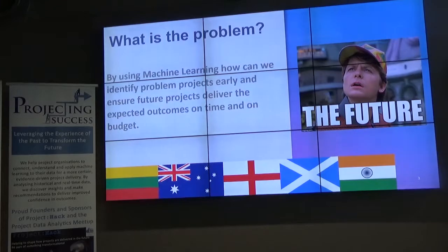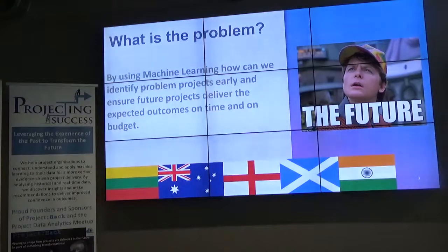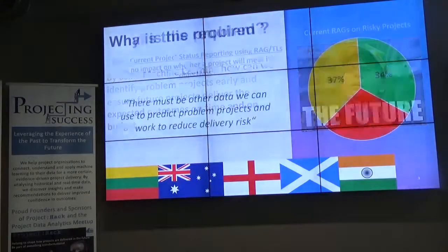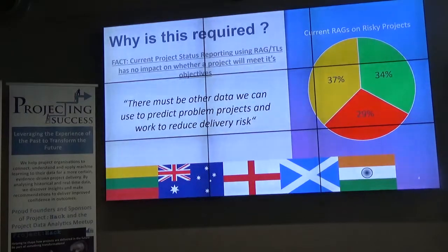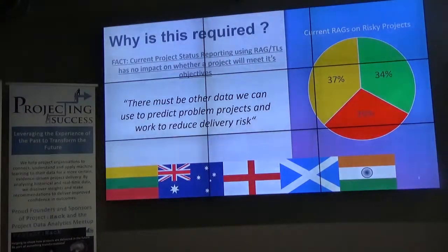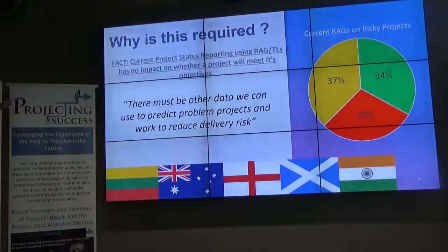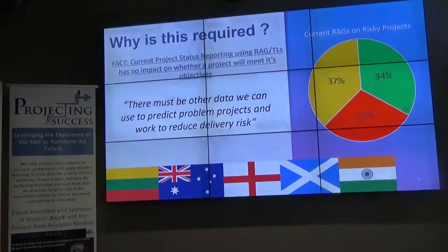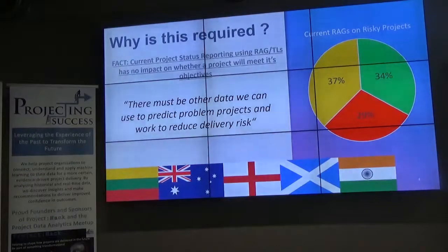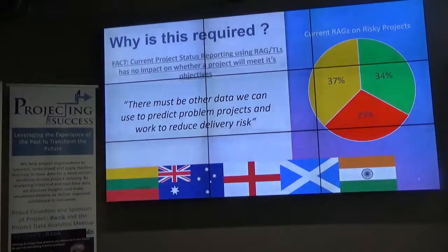So what is our problem? By using machine learning, how can we identify problem projects early and ensure future projects deliver the expected outcomes on time and on budget? We were using Oxford data to make sure we could get that information to actually do machine learning. What we identified through the data is that risky projects — those over budget and over schedule — were reporting 34% of the time green, 37% amber, and 29% red. So project status reporting, which most PMOs love and read all the time, is actually incorrect most of the time. We must be able to find a better way using the data inside project management systems to eliminate delivery risk to the portfolios.